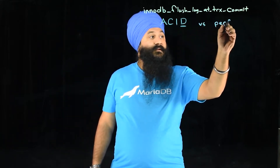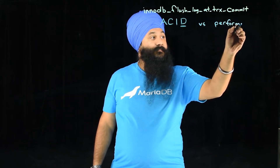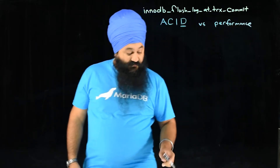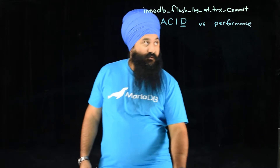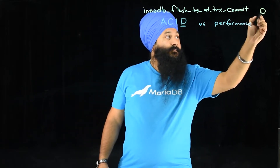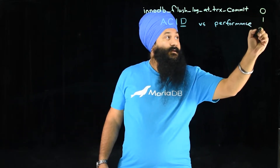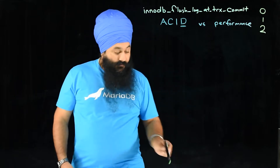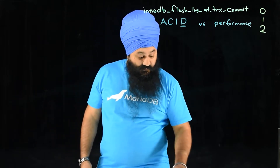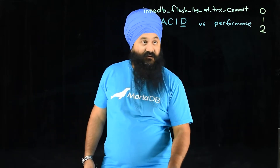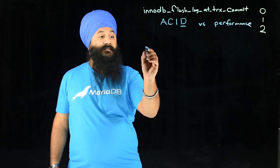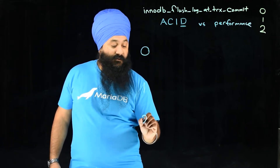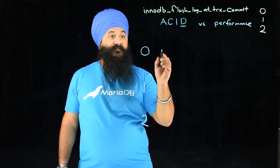There is a bit of a trade-off when you look at this variable. The possible values for this variable are zero, one, and two. So let's take a look at what these mean. We'll write them down on the side here and look at how they affect things.